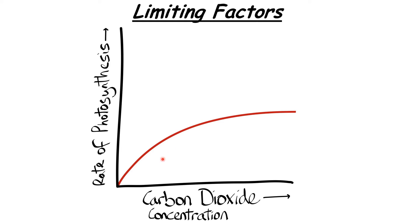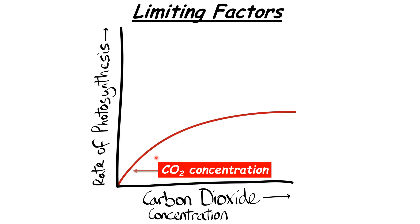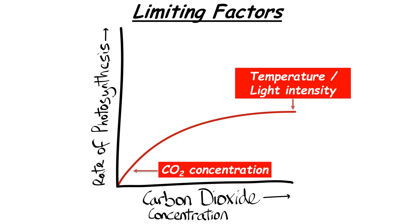A carbon dioxide concentration graph looks identical except CO₂ concentration is on the x-axis. The pattern is the same: CO₂ concentration is the limiting factor where the graph is increasing. Once the graph levels off, the limiting factors are temperature or light intensity. Essentially, whatever is on the x-axis is the limiting factor at the point where the graph is rising.